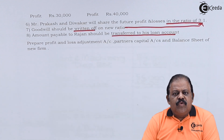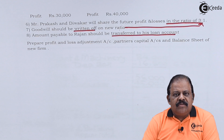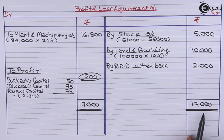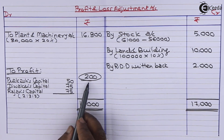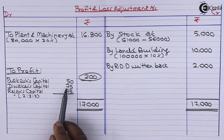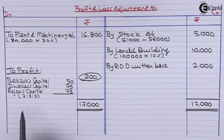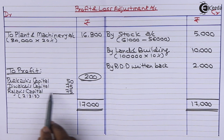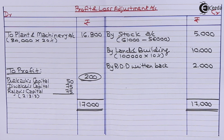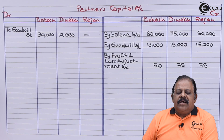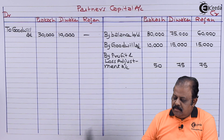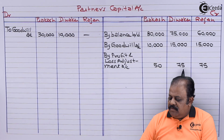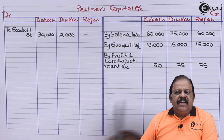We are required to close the profit and loss adjustment account. It is showing a profit of Rs. 200. This profit is distributed among all partners in the old ratio of 2:3:3 — Prakash gets Rs. 50, Diwakar Rs. 75, Rajan Rs. 75. This will be credited to their respective capital accounts.